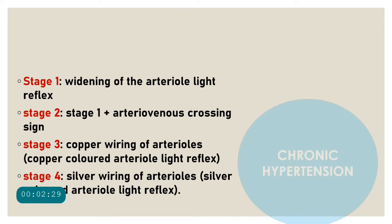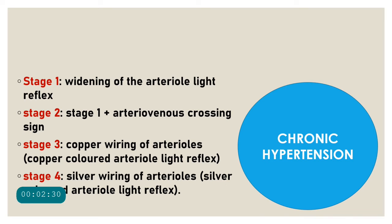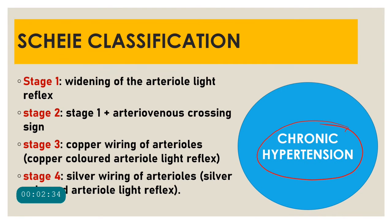If there is a modified Sheils classification, there should also be a classification for chronic hypertensive retinopathy. That is the Sheils classification, which considers arteriosclerosis of the vessels and gives the following grading. Stage 1 involves widening of the arteriole light reflex.